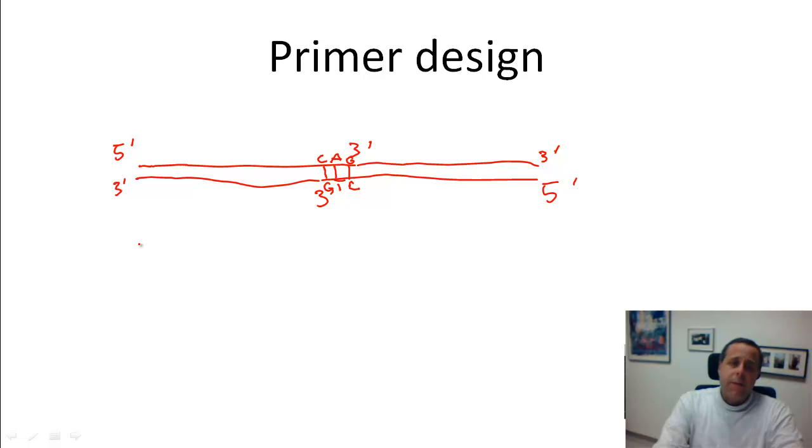You not only design your primers not to anneal to each other, but you also design them not to anneal to themselves. So let's assume these are two copies of the same primer. Again, the five prime ends being here.